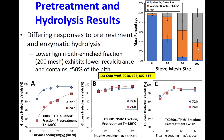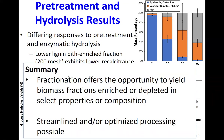Subjecting the pith-rich fraction from the 200-mesh sieve to enzymatic hydrolysis and comparing it to the depithed fraction showed that the pith fraction yields very high sugar even at very low enzyme loadings. We also reduced pretreatment severity and still got very high yields with mild pretreatment, demonstrating proof of concept that fractionation offers the opportunity to yield biomass fractions enriched or depleted in properties, enabling streamlined and optimized processing.